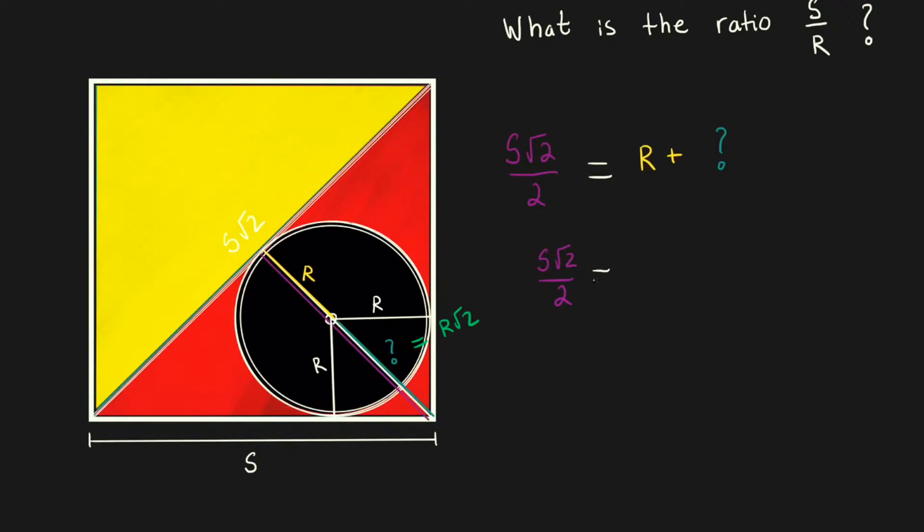So we can sub that into our equation. Now I can solve this equation for the ratio of s to r. I factor r out of the right hand side, divide both sides by r, and then divide both sides by root 2 over 2 or multiply by its reciprocal 2 over root 2.